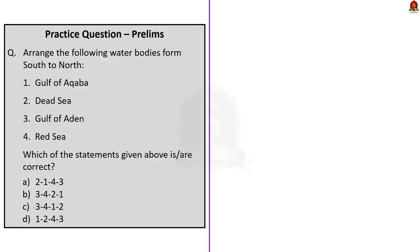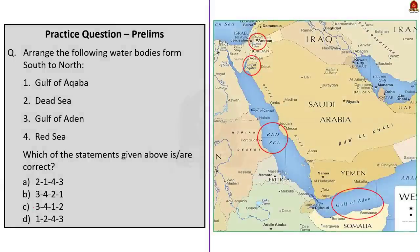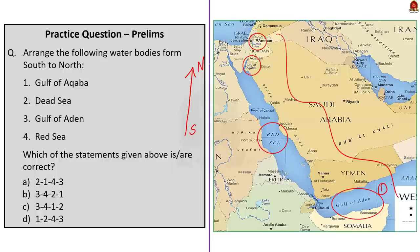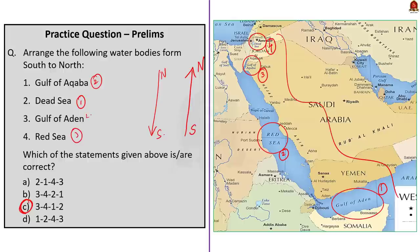The second question asks to arrange four Western Asian water bodies from south to north. Going from south to north: Gulf of Aden comes first, followed by the Red Sea, then the Gulf of Aqaba, and finally the Dead Sea. The correct answer is option C — 3, 4, 1, 2. Be very careful — if you mistake the direction and arrange north to south (Dead Sea, Gulf of Aqaba, Red Sea, Gulf of Aden = 2, 1, 4, 3), that arrangement also appears in the options. So always pay close attention to the direction asked.